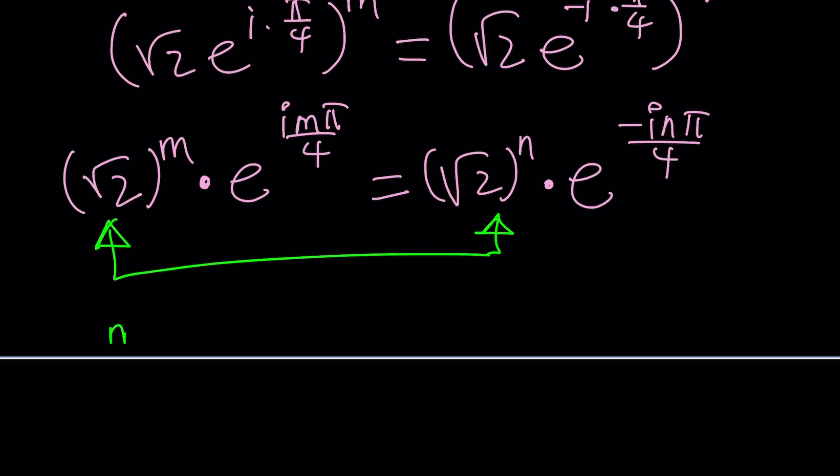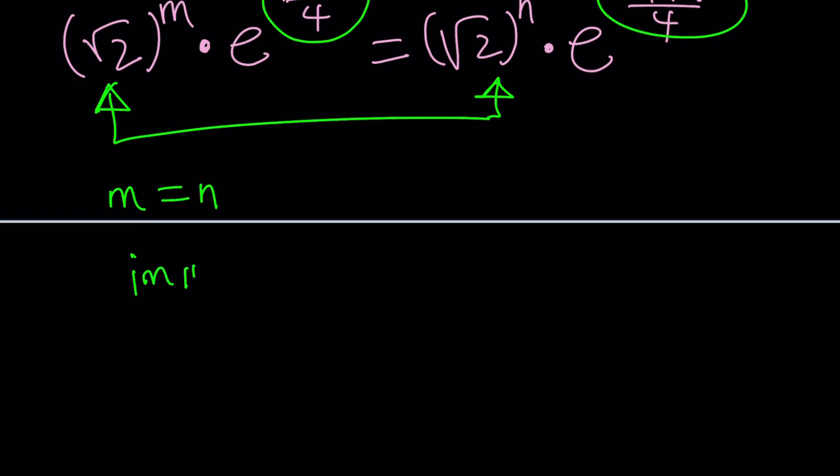I don't think there's another way to do it. But the second part, the exponents tell us a different story. If I write i m pi over 4, if I set it equal to negative i n pi over 4, a lot of things are going to cancel out. We're going to end up with m equals negative n, or m plus n equals 0. So how can m and n be equal and opposites at the same time? That can only happen if m and n are both equal to 0.